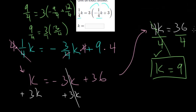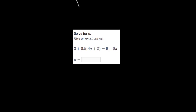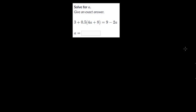Now let's do one final problem, just to kind of wrap this up. Alright, this one has decimals, but it effectively will be solved the same way. So we see parentheses, so that's what we want to get rid of first. So let me rewrite it. 3 plus 0.5. And we have 4a plus 8 in parentheses equals 9 minus 2a.